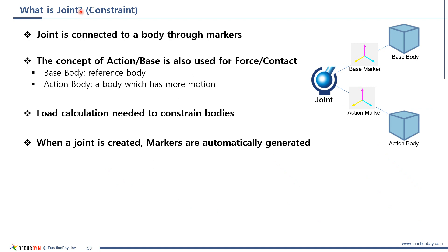Joint is connected to a body to constrain it. But actually, joint is not connected to a body directly. It is connected through markers as shown in this image. We call one body a base body and call another an action body. Base body is usually a reference body and a body which has more motion is set to an action body. For your information, force and contact also use this concept of base and action.